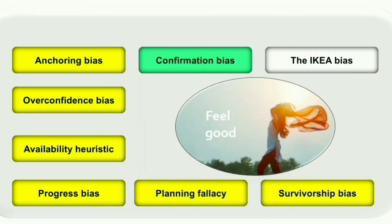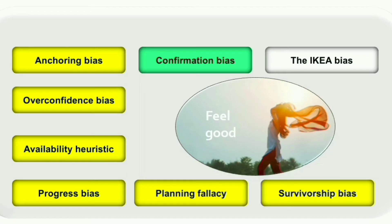The next one is confirmation bias. Confirmation bias is the tendency of people to favor information or beliefs that already exist in their mind. They tend to accept decisions that confirm their existing beliefs and dismiss information that may oppose those beliefs.